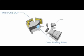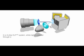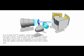In a three-chip DLP system, white light is passed through a prism that divides the light into red, green, and blue. Each chip is dedicated to a primary color. The red, green, and blue reflections from the three chips are combined and passed through the lens to project an image made up of more than 35 trillion colors.